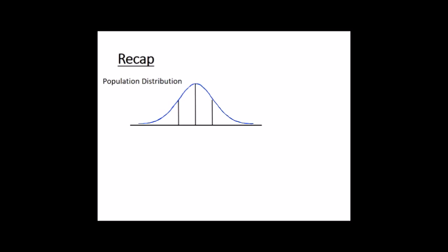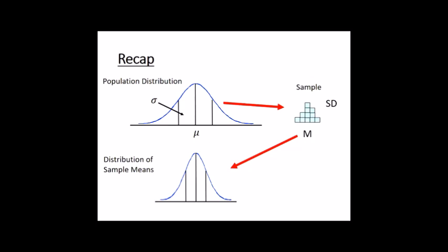So we can have a population distribution with a mean we signify by mu and a standard deviation by sigma — those are the population parameters. We can take a sample from that population and measure a mean and standard deviation for our sample, using regular letters to indicate those. It'll have a mean, a central tendency, and some kind of width.